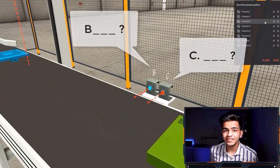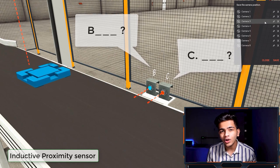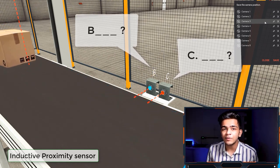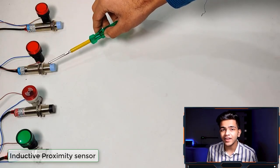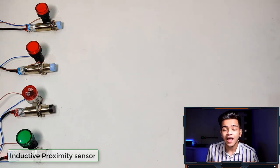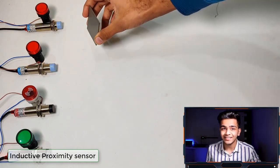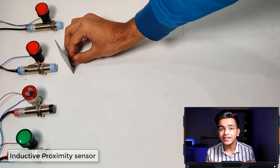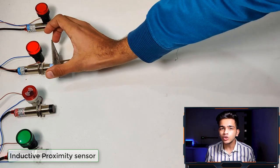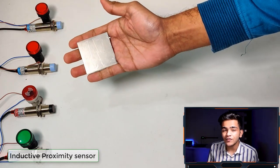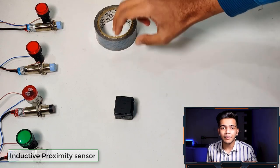The third sensor, Sensor C, is an inductive type proximity sensor. An inductive type proximity sensor will only detect metallic targets. The working principle is electromagnetic induction using the concept of eddy currents. When any metallic target comes within range of the sensor, it is detected. The sensing range increases with the diameter of the sensor — greater diameter means greater sensing range. Typically the sensing range of an inductive proximity sensor is about 2 mm to 15 mm, depending on the sensor's diameter.